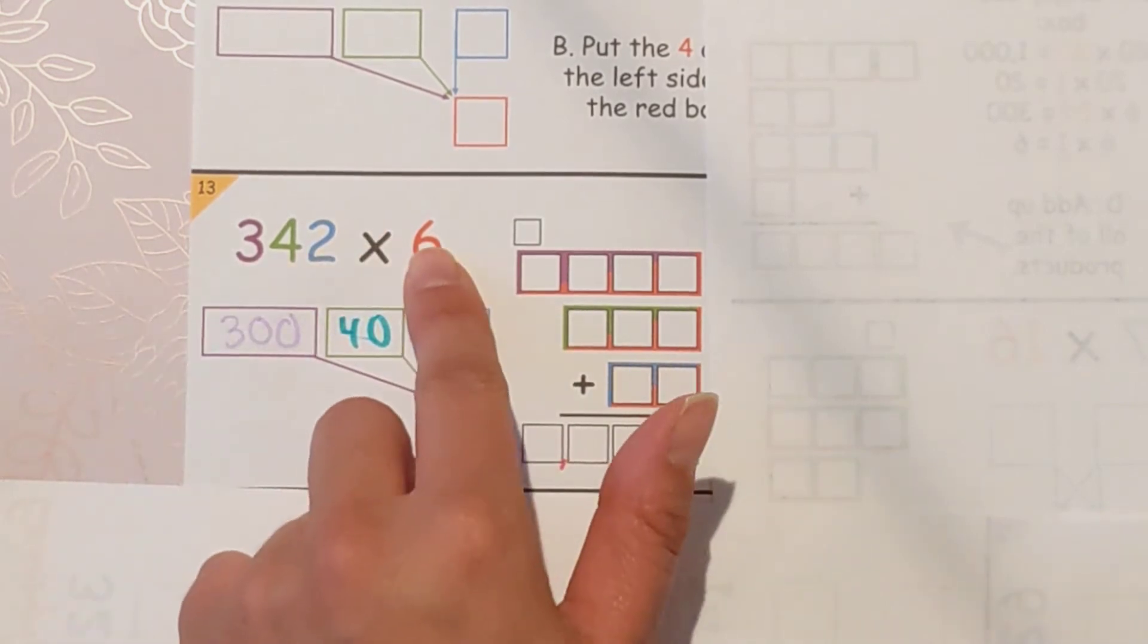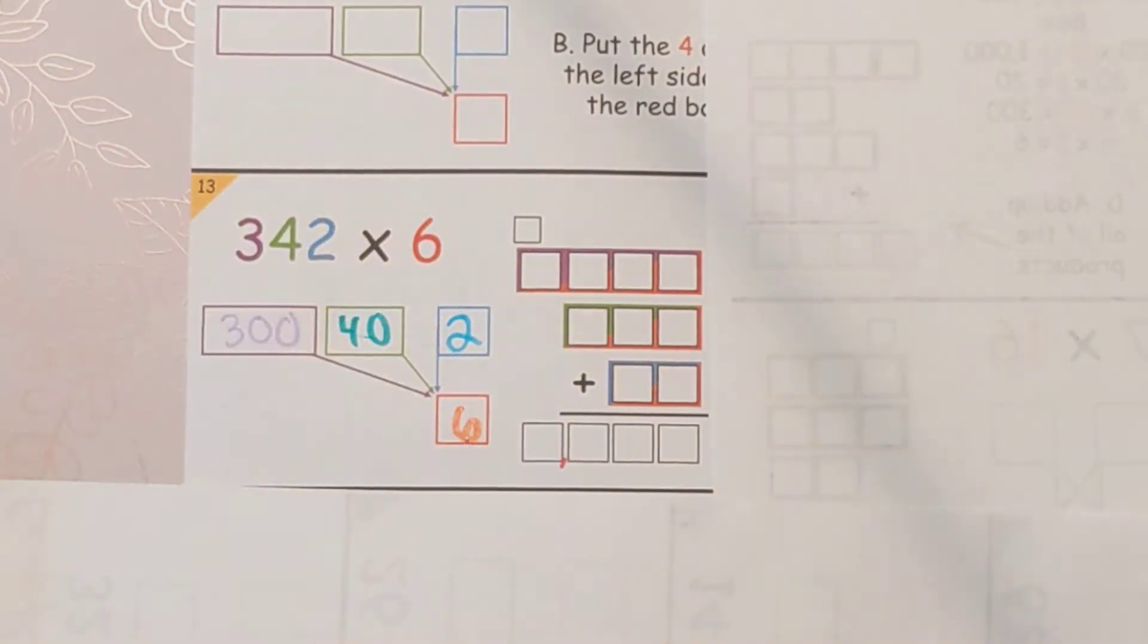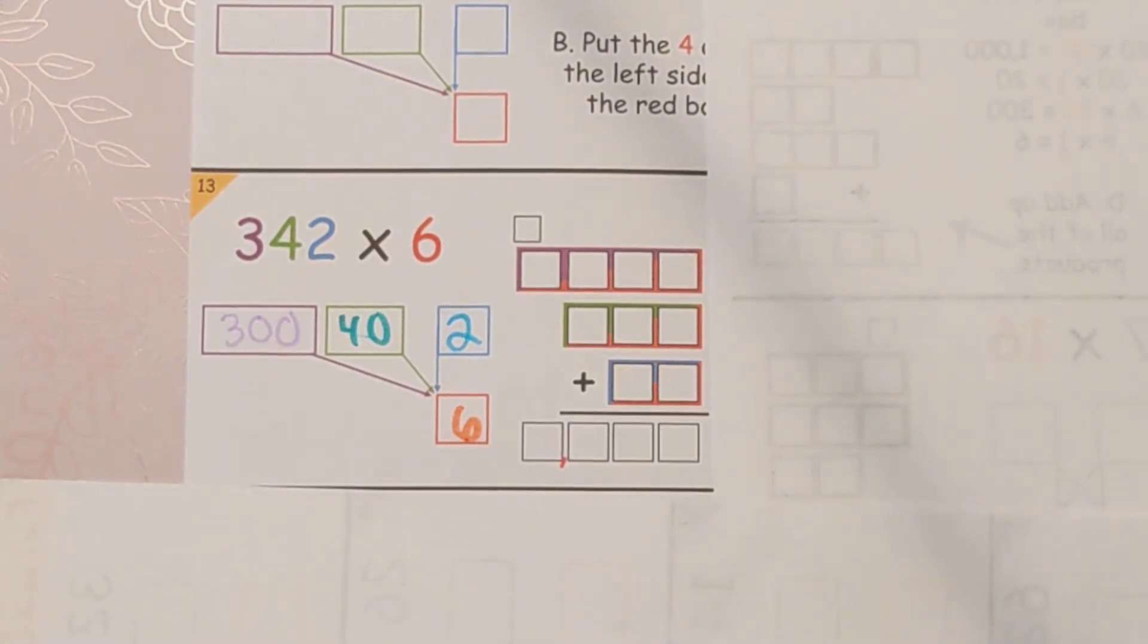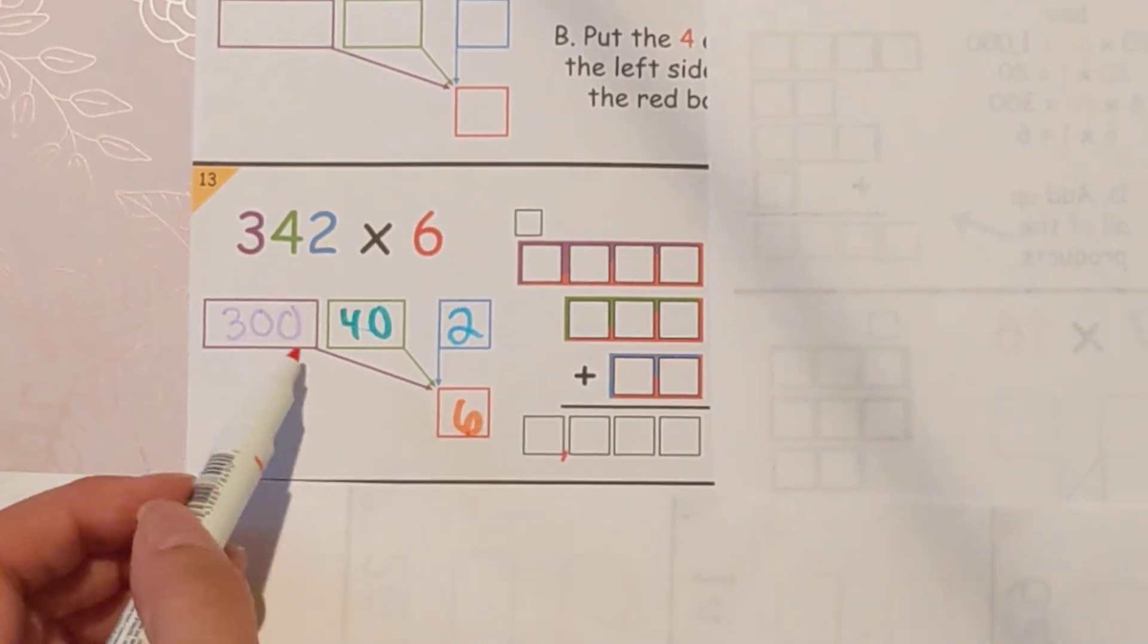But it's going to multiply against the six. So the six goes in the red box. Here's what we're doing. We're going to multiply 300 times six. That's what this little purple arrow is pointing towards.